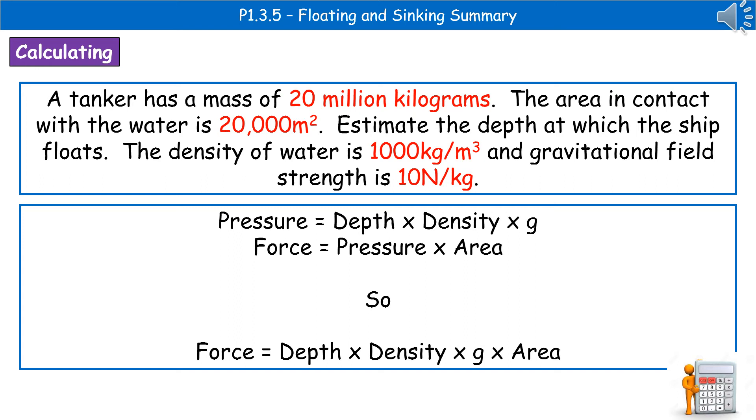All we've done there is we've taken something we don't know, because we don't know pressure, it's not given to us there, but we know we can work out pressure by doing depth times density times G. And then we've merged those into the one equation. So, force is depth times density times gravitational field strength times area.